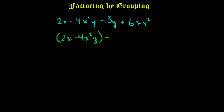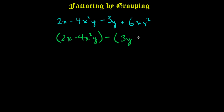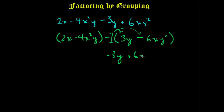We're going to rewrite the second group as minus (3Y minus 6XY²). Careful here — if you put a plus sign in front of the parentheses, this negative is going to distribute through and you won't have the same expression. So in order to keep this equal, you actually have to put a minus sign here. That way, distributing the negative 1 through gives negative 3Y, and negative 1 times negative 6XY² is positive 6XY² — which is the same as the original.